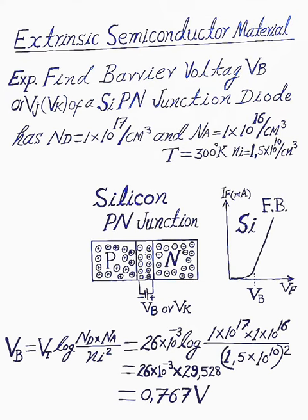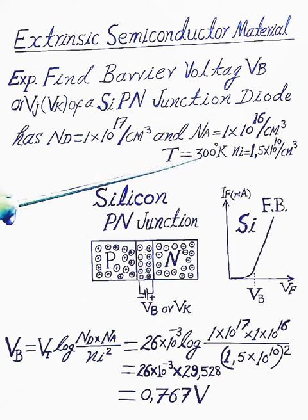Hello, there is one example for PN junction diode for barrier voltage. Find barrier voltage VB of a silicon PN junction diode that has Nd equal to 1 multiplied by 10 raised to the power 17 per cm³ and Na equal to 1 multiplied by 10 raised to the power 16 per cm³ at temperature T equal to 300 degrees Kelvin.